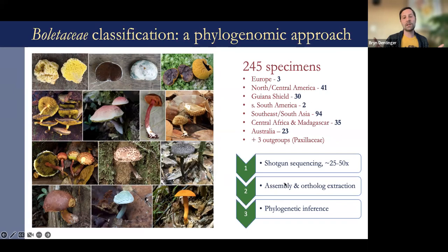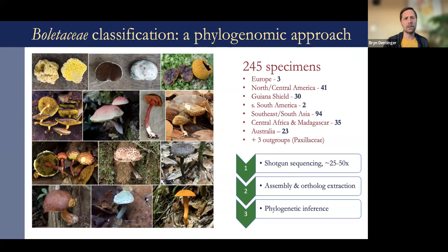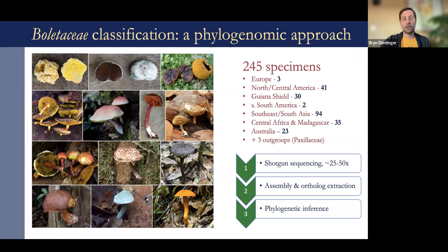Once we have the assembly — the long fragments of sequence — we can then extract what are called orthologs, which are the same gene across all species. We pick orthologs based on different criteria. From there we go on to phylogenetic inference, a standard approach that people have been using for decades with single or few genes, but here we're scaling that up to hundreds or thousands of genes.